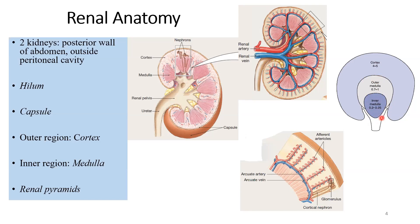This sluggish blood flow in the inner medulla is involved in the kidney's ability to form concentrated urine, as the nephrons there are involved in concentration. At the same time, this low blood flow makes the inner medulla vulnerable to ischemic injury. So the same design that gives us a brilliant ability to conserve water also makes the inner medulla vulnerable to ischemic injury.